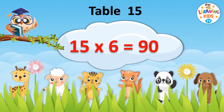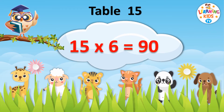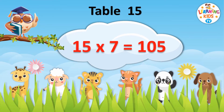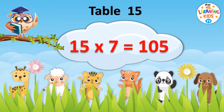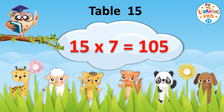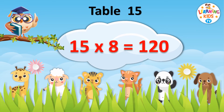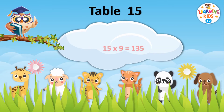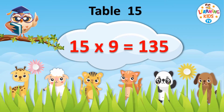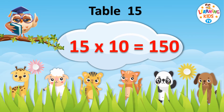Fifteen sixes are ninety. Fifteen sevens are one hundred and five. Fifteen eights are one twenty. Fifteen nines are one thirty-five. Fifteen tens are one fifty.